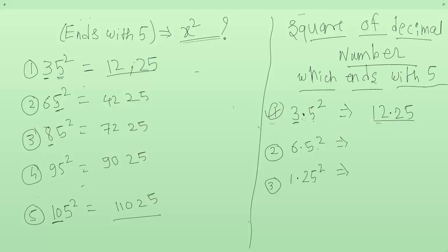Let's look at example number 2: 6.5 square. Now square of 5 is 25. Multiply 6 with its next digit, that is 6 into 7 is 42. Now there is a decimal point before 1 digit, right? So in our answer, the decimal point will be before 2 digits. Therefore the answer will be 42.25.